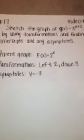It's left 2, down 3 because x plus 2, since it's positive, is going left, so it's left 2. And then it's minus 3, so it's down 3. The asymptote is y = -3.